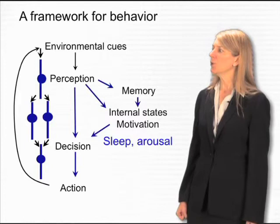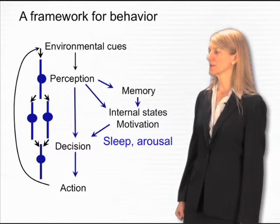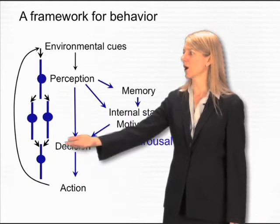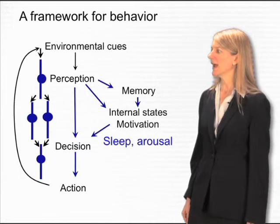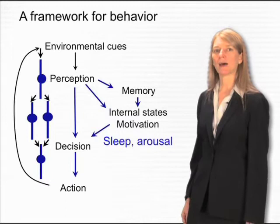Returning to our framework of behavior, we can now begin to see what's happening on the left side of this diagram about how environmental cues and perception can lead to distinct actions by propagating information through different parts of the nervous system. Let's think now about the right-hand side of this diagram and think about internal states that can motivate behavior. For that, I will talk about important internal states of sleep and arousal.